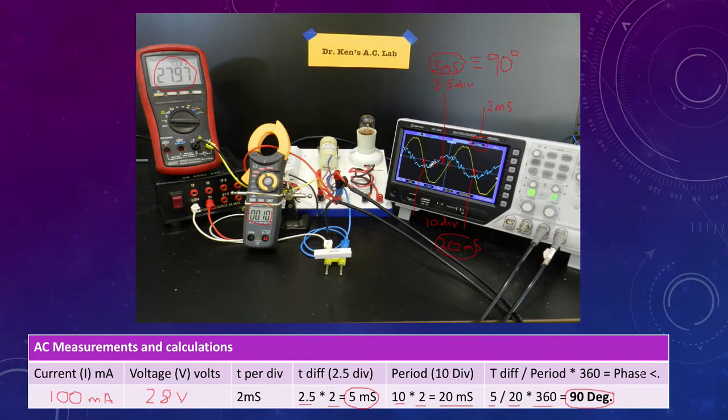And you'll notice that the blue wave, the current, is rising before the voltage, which is the yellow one. So it's 90 degrees lead.